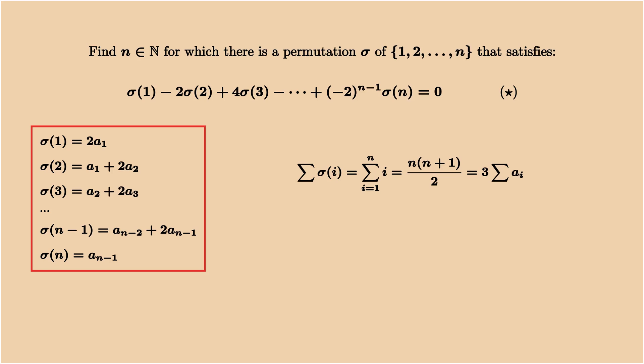This means when we take the sum of sigma i, it must be n times n plus 1 over 2. On the other hand, the sum of sigma i is 3 times the sum of ai. So a necessary condition is that 3 divides n times n plus 1, which means the residual of n modulo 3 is either 0 or 2.